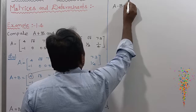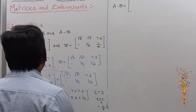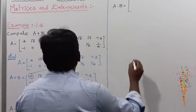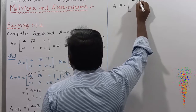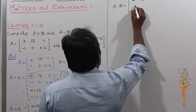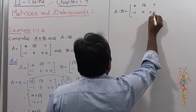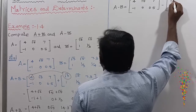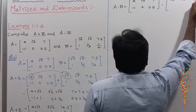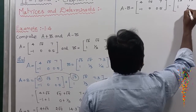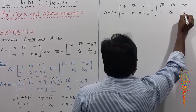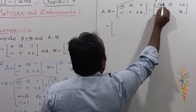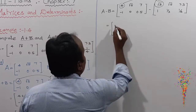Now for A minus B. The subtraction property of matrices is also satisfied when both matrices have equal order. The values of A are [[4, √5, 7], [-1, 0, 0.5]] and we subtract matrix B which is [[√3, √5, 7.3], [1, 1/3, 1/4]].